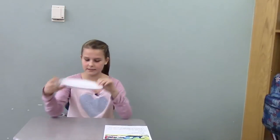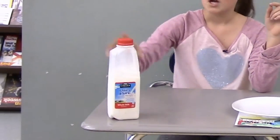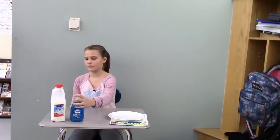So first we're going to need a paper plate, or you can use styrofoam like we are. We're also going to need some whole milk and Dawn dish soap. You're also going to need some food coloring.